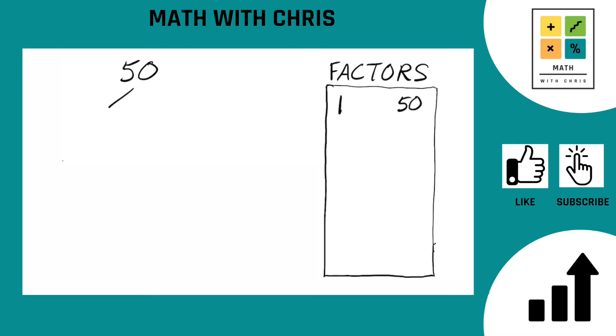Now we're going to branch out 50 using our factor tree. And then we need to think of two numbers that multiply together to give us 50. There's a couple different options. Let's go with 5 times 10.